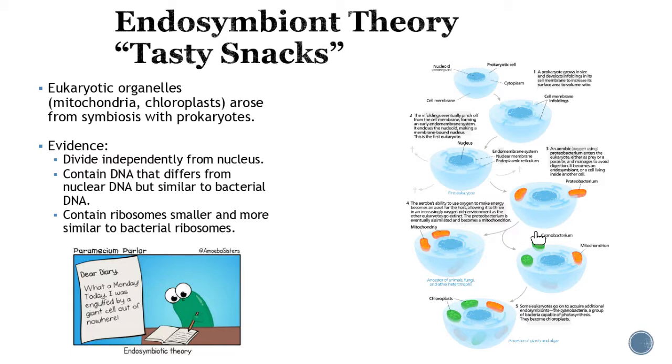Same thing happened with a different organelle. A eukaryote engulfed the cyanobacterium which goes through photosynthesis, and it's like you can make energy from sunlight, that is awesome. So instead of breaking it down for food, keep it around. There we have our chloroplasts. Evidence that mitochondria and chloroplasts were once individual organisms is because they each have their own DNA and they also have ribosomes that are smaller and more similar to bacterial ribosomes.